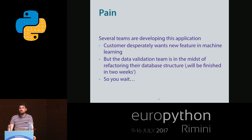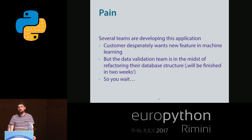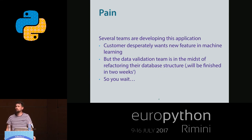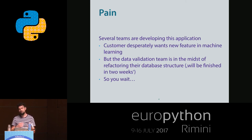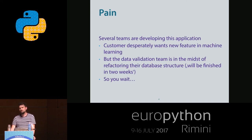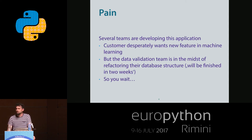For example, we have several teams developing this application, so there are dependencies. We all depend on one database. The customer desperately wants a new feature in machine learning. The machine learning team says it's no big deal - we just change our query a bit and write one more field to the output table. But another team is also working on the database, doing some refactoring on data validation. There are conflicts - it takes two weeks, and you as the machine learning team have to wait. That's bad, but there's nothing you can do about it.